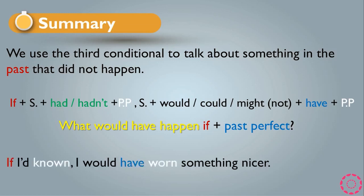Let's see a final example: 'If I had known, I would have worn something nice here.' This sentence is a third conditional and talks about something that didn't happen in the past. We can also say: 'I would have worn something nice here if I had known.' We can replace the second sentence to the first, moving if to the middle, and remember to remove the comma when if is in the middle. This is all about the third conditional sentence. I hope you understand very well. Thank you very much.